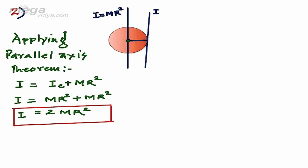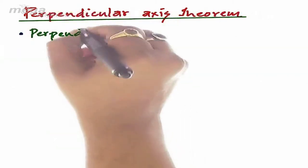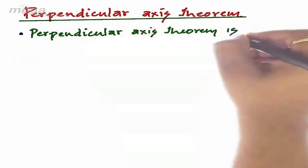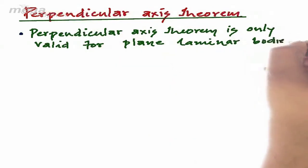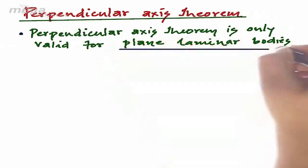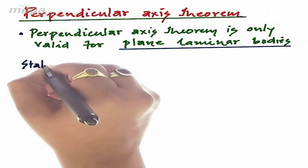Similarly, we can calculate the moment of inertia of any geometrical figure such as disk, sphere, etc. Now let us discuss the Perpendicular Axis theorem. The first thing to keep in mind is that the Perpendicular Axis theorem is only valid for plane laminar bodies — that is, two-dimensional bodies having no thickness at all.